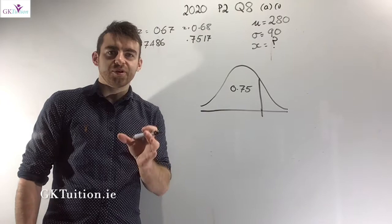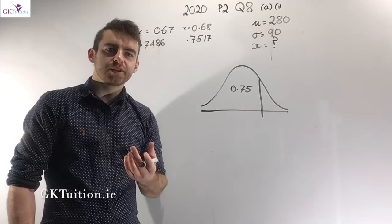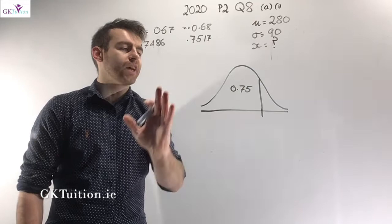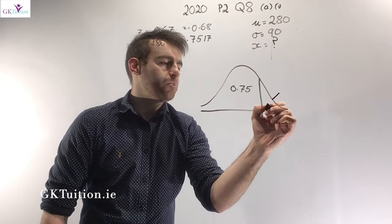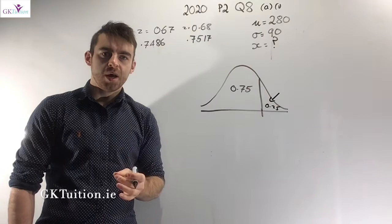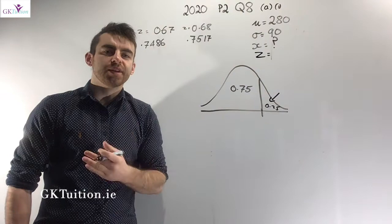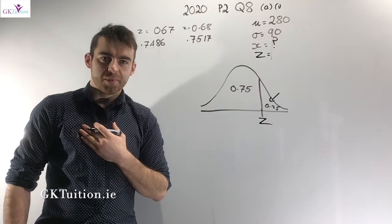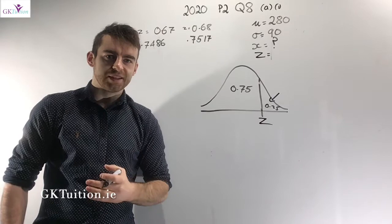The standard deviation is 90 and we're told that if someone gets in the top 25% they're asked for interview. On a normal curve, I want to work out the minimum Z-score that would allow someone to be called back for interview — that's the Z-score above 75% of all of the data.